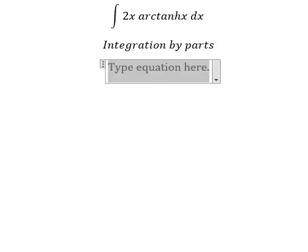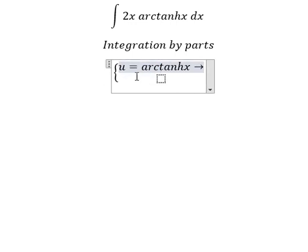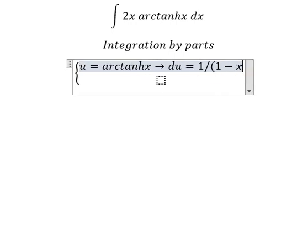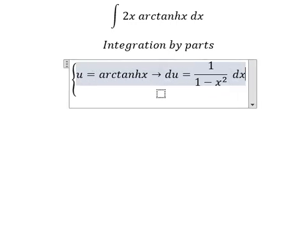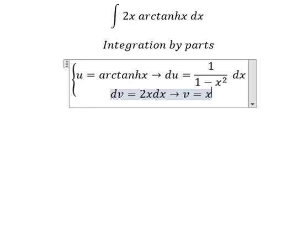So I will put u equal to arctanh x. If we do the first derivative for both sides, we have du equal to 1 over 1 minus x squared dx. dv is 2x dx, and the integration of this gives us v equal to x squared.